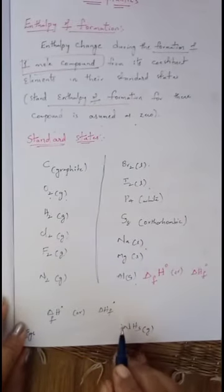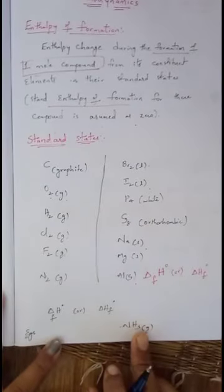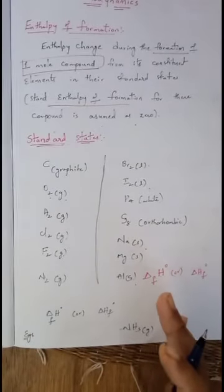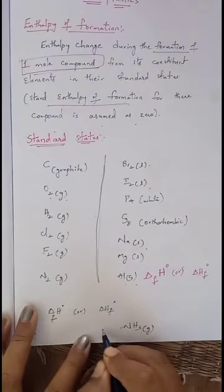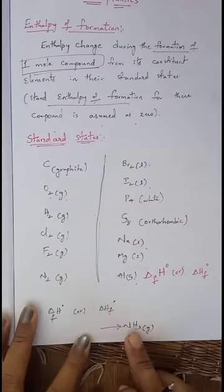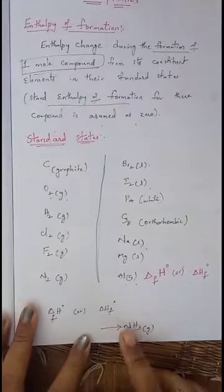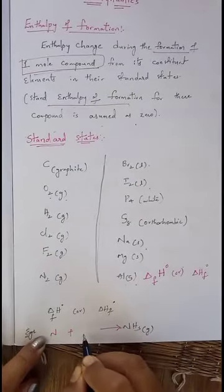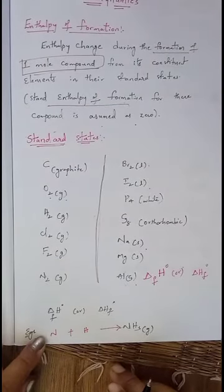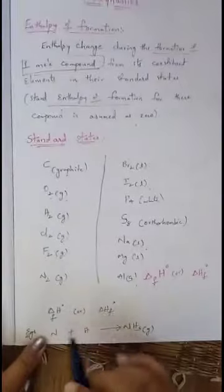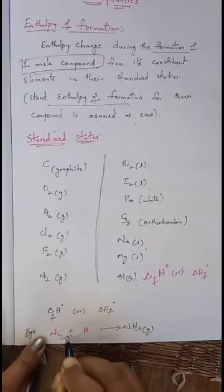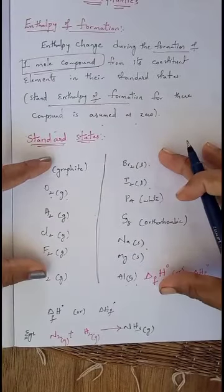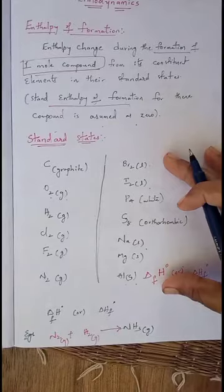For example, to calculate enthalpy of formation of ammonia, NH3 is the product so it is written on the right side. The two constituent elements in ammonia are nitrogen and hydrogen. The standard state of nitrogen is N2 gas and of hydrogen is H2 gas. Take a screenshot of this — in every reaction we take the standard states of different elements.